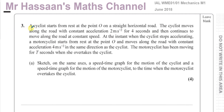The question states that a cyclist starts from rest at point O on a straight horizontal road. The cyclist moves with constant acceleration of 2 meters per second squared for 4 seconds, then continues at constant speed. At the instant the cyclist stops accelerating, a motorcyclist starts from rest at O with constant acceleration of 4 meters per second squared in the same direction. The motorcyclist has been moving for T seconds when she overtakes the cyclist. We need to sketch on the same axes a speed-time graph for both the cyclist and motorcyclist up to the time of overtaking.